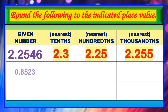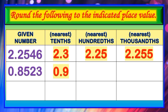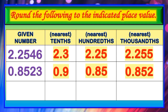Second given number: 0 and 8,523 ten-thousandths. Nearest tenths, that would be 0 and 9 tenths. Nearest hundredths, that would be 0 and 85 hundredths. Nearest thousandths, that would be 0 and 852 thousandths.